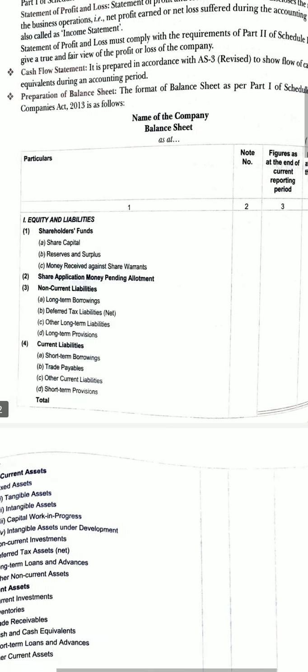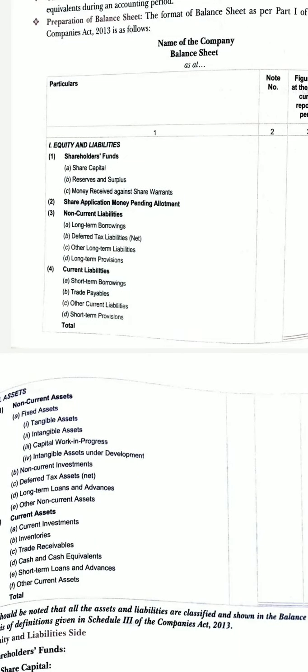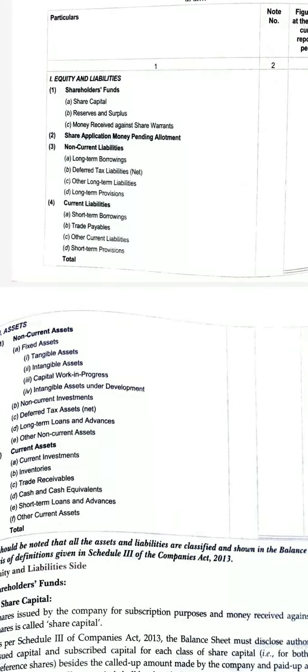Under assets, the major head is non-current assets. Fixed assets include tangible assets, intangible assets, work in progress, and intangible assets under development. Then non-current investments, deferred tax assets, long-term loans and advances, and other non-current assets. Current assets include current investments, inventories, trade receivables, cash and cash equivalents, short-term loans and advances, and other current assets. The total of both sides will be the same — assets equals liabilities — as per the accounting equation.